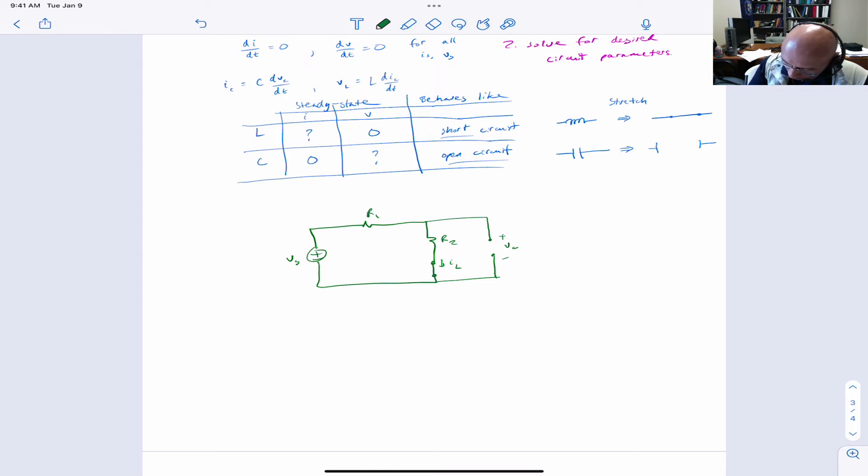Il can just be obtained by Ohm's law. And Vc, if you look carefully at the nodes, Vc is the voltage across R2. And we can get the voltage across R2 using voltage division. So I just explicitly did it by taking current times resistance in Ohm's law.